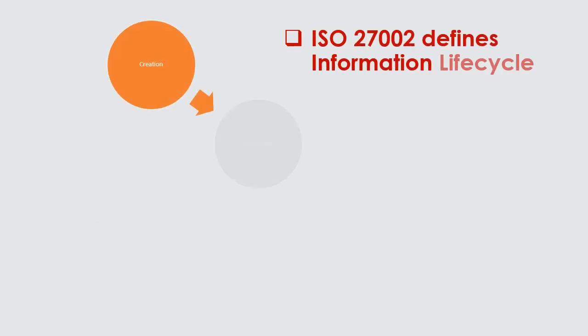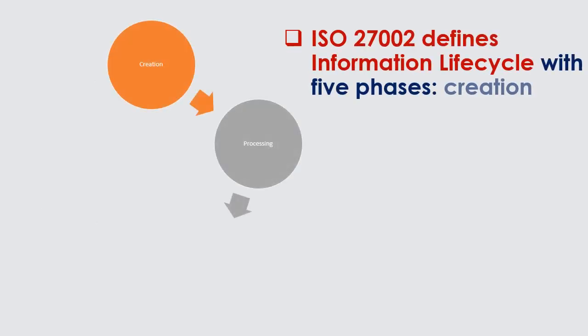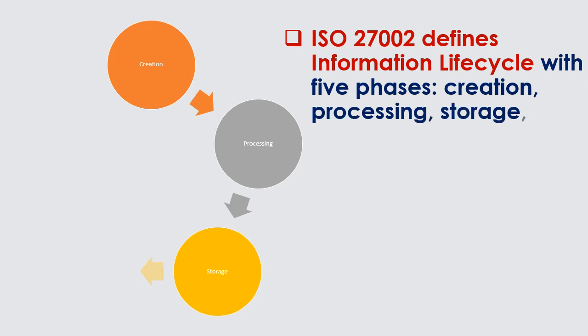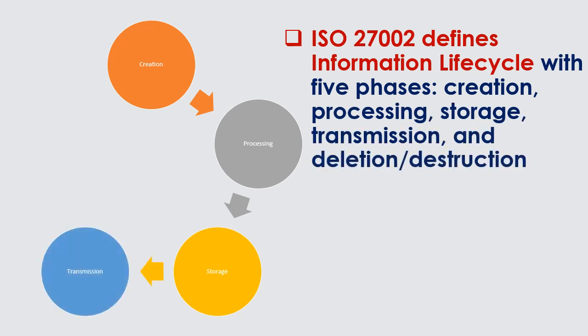ISO 27002 defines the information lifecycle with five phases: creation, processing, storage, transmission, and deletion/destruction.